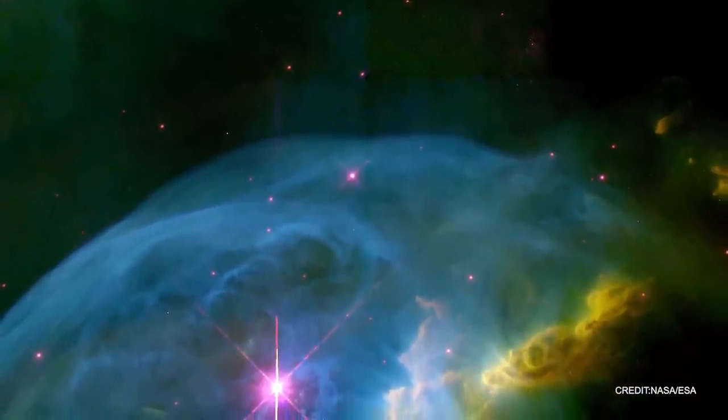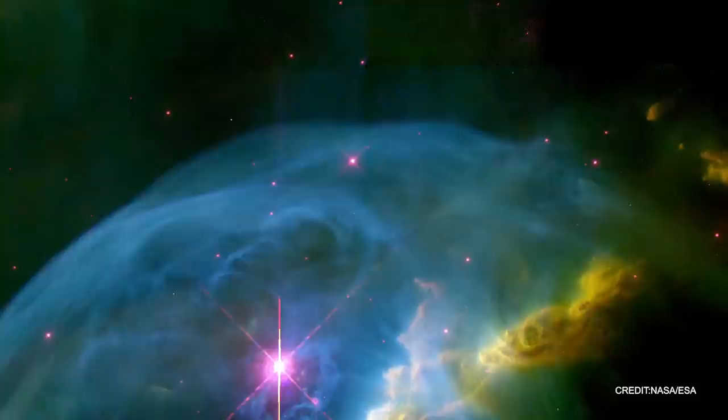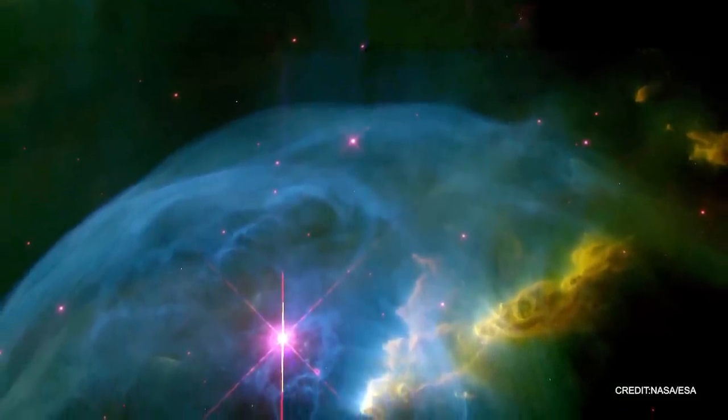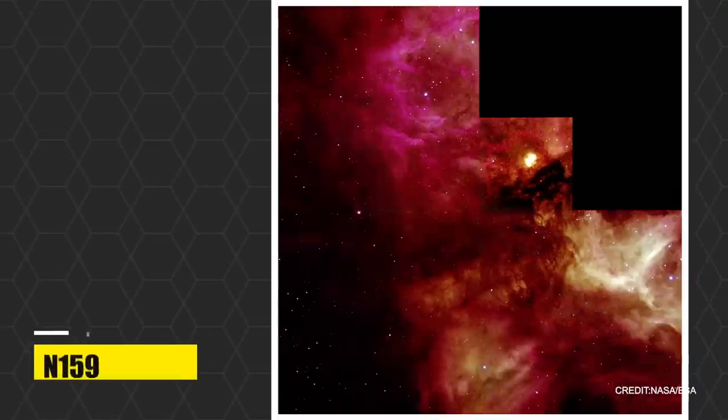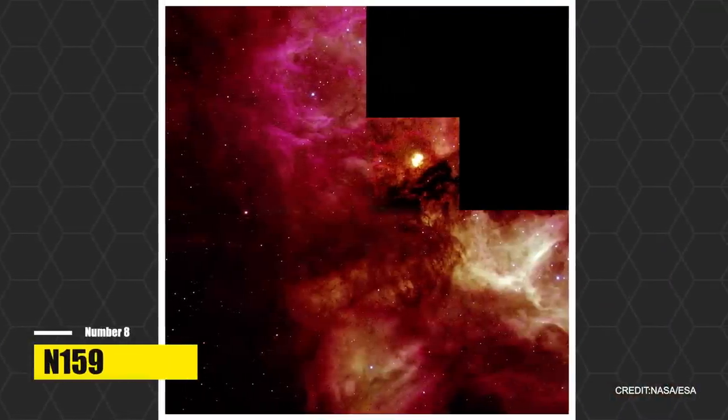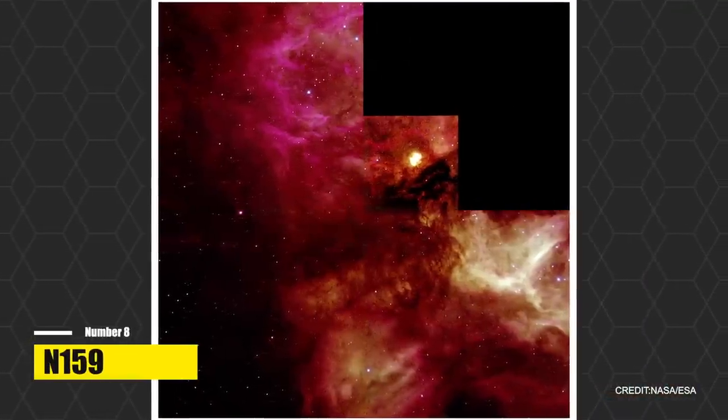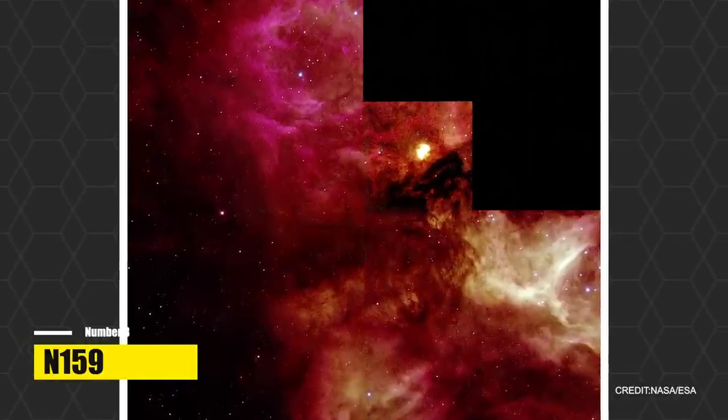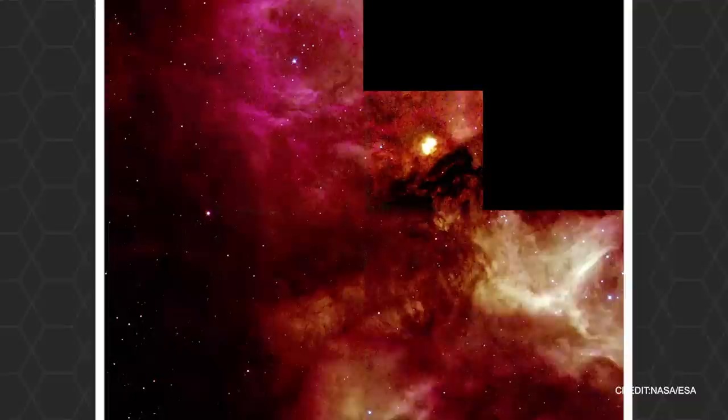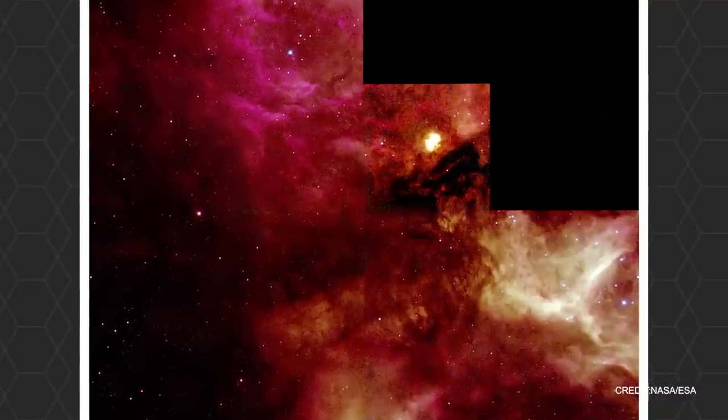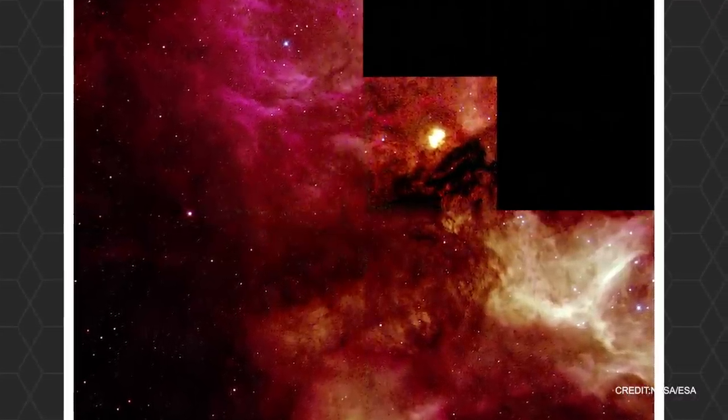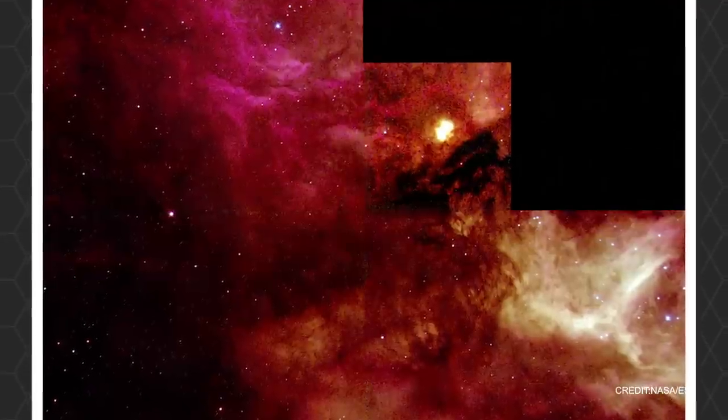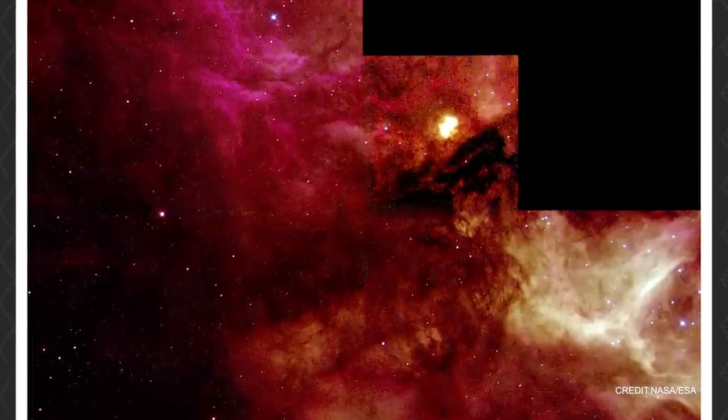Number eight, N159, A Symphony of Starbirth in the Large Magellanic Cloud. Imagine witnessing a celestial drama unfolding in the distant reaches of the cosmos, featuring a dynamic spectacle of star creation. Welcome to N159, a frenzied hub of stellar birth nestled within our satellite galaxy, the Large Magellanic Cloud, LMC. At a staggering distance of 170,000 light-years away, this stage is set in the constellation Dorado.